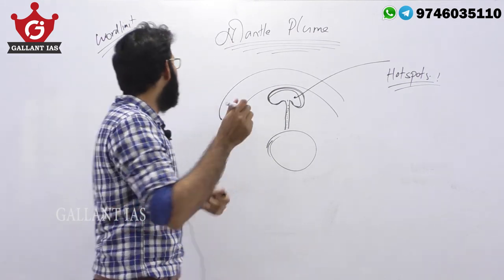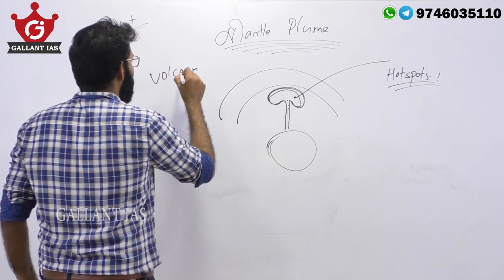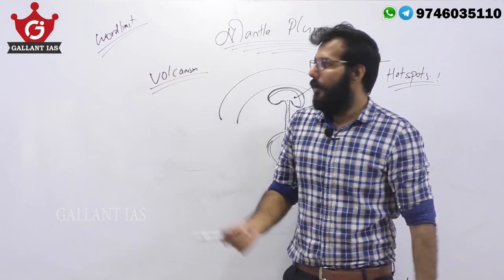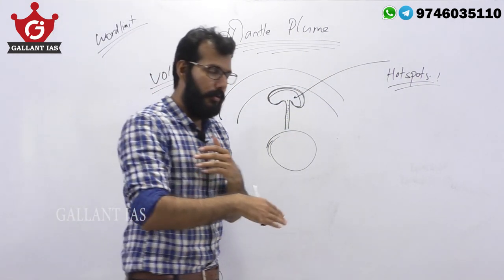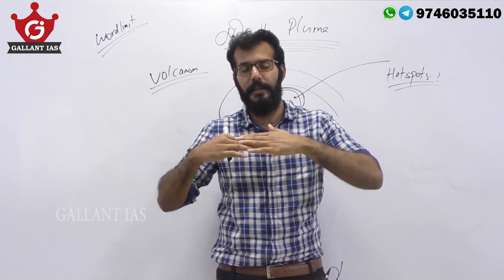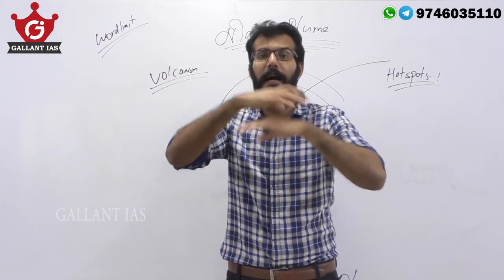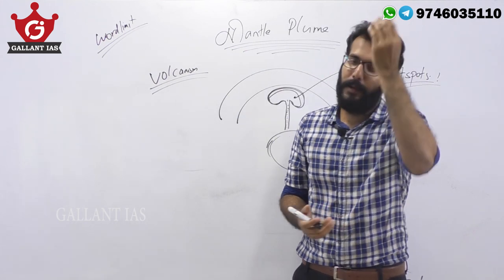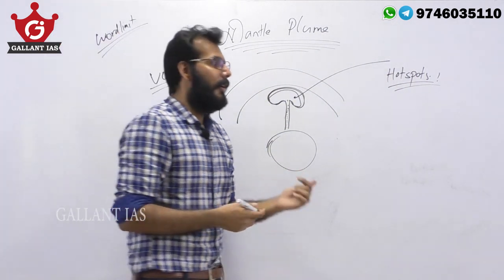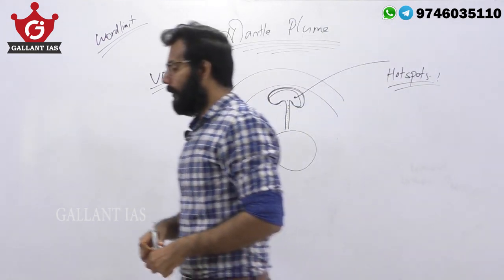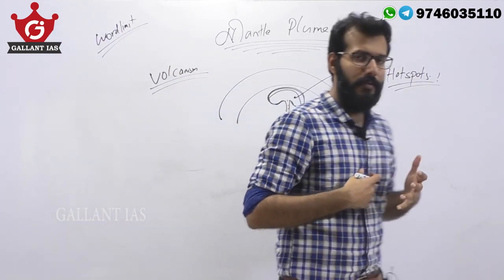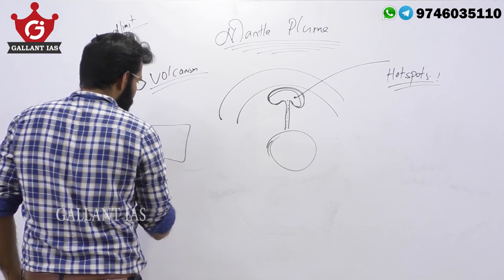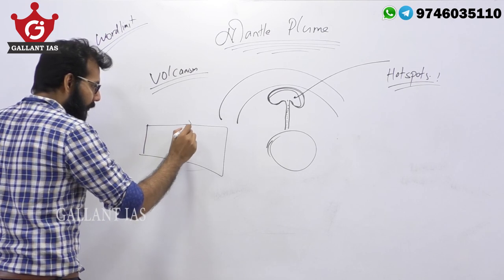Remember plate tectonics and volcanism? We know how volcanoes emerge. It can emerge at a convergent boundary where you have a denser crust going down into the depth — it is heated up and volcanic island arcs are formed. Divergent zones also have volcanism; sea-floor spreading is a very good example. Volcanism is related to plate movements — it happens on plate boundaries.